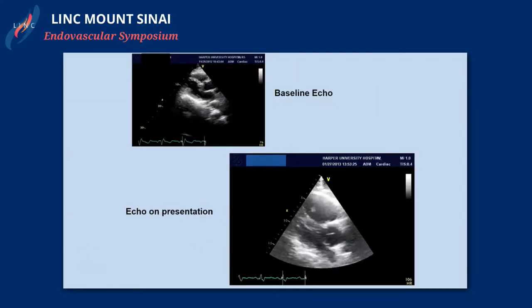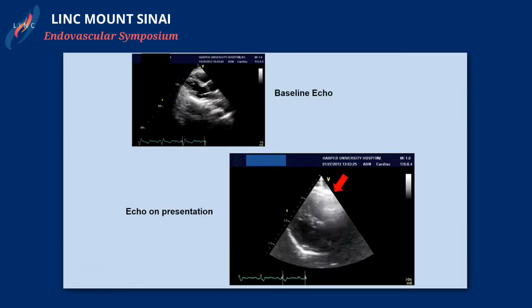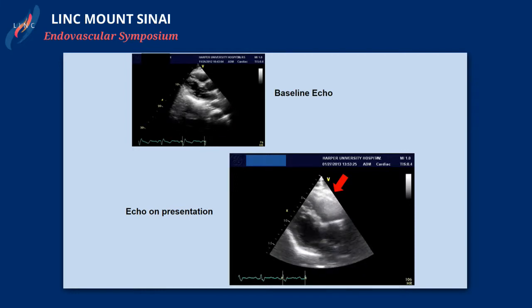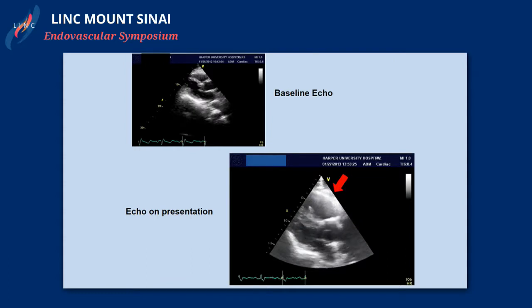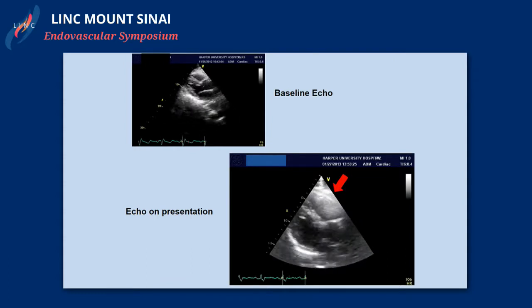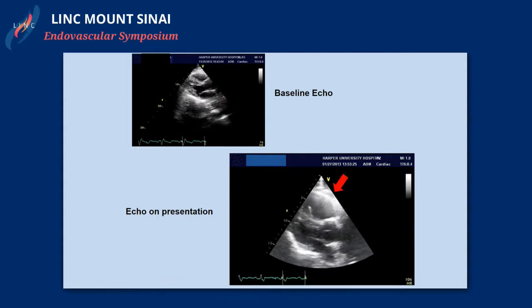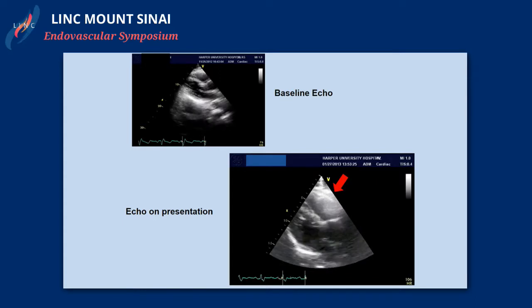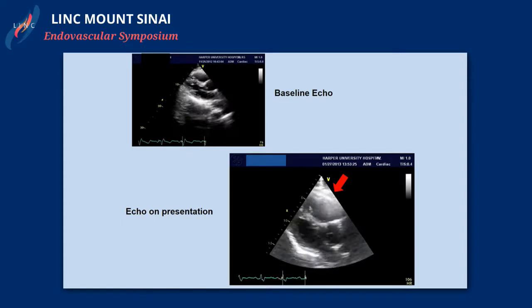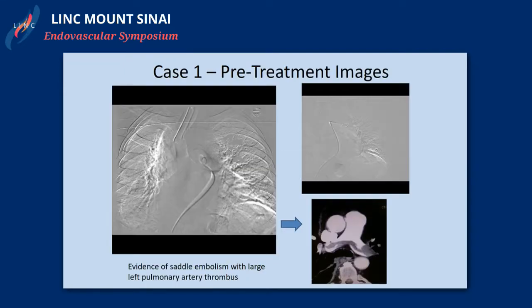This is the echocardiogram at baseline. The patient had an echo at our institute before, showing an RV that functioned properly. Below, you see an echocardiogram in the ER showing a blown-out right ventricle. The other images showed a McConnell's sign that you see commonly in massive and sub-massive PE.